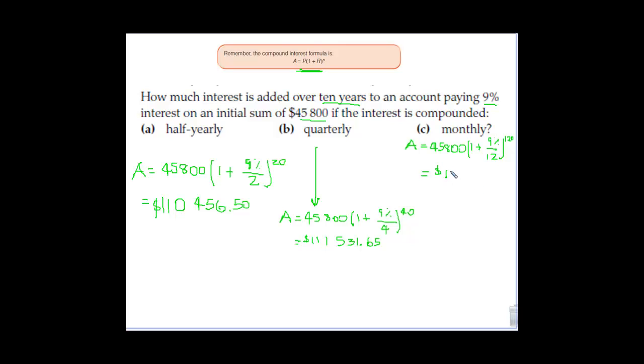So that comes out to $112,272.15. So again, a little bit better to compound it monthly. It was better to compound quarterly than half-yearly.